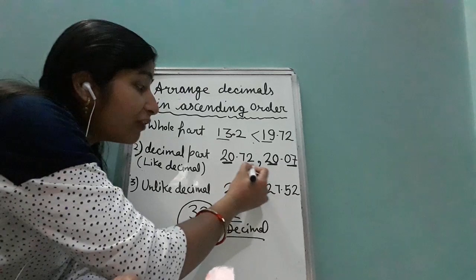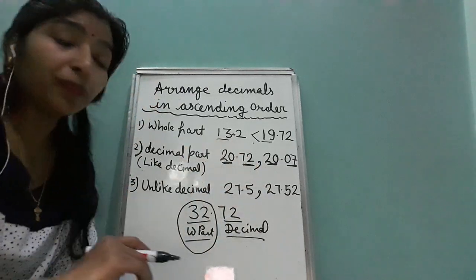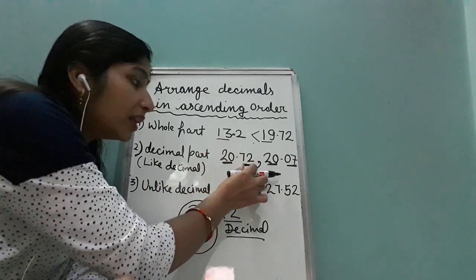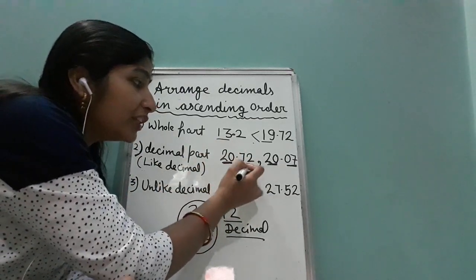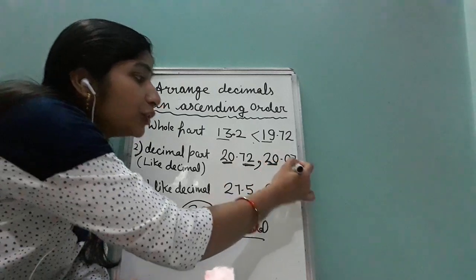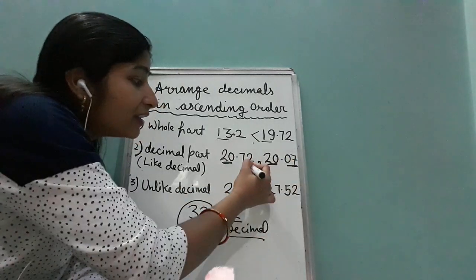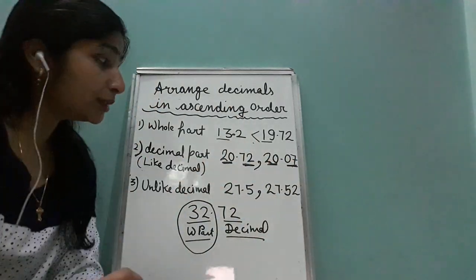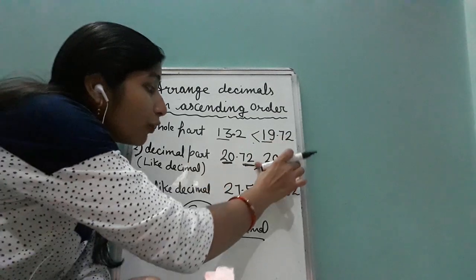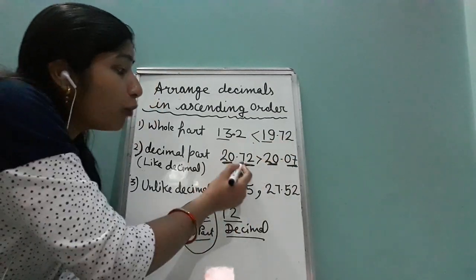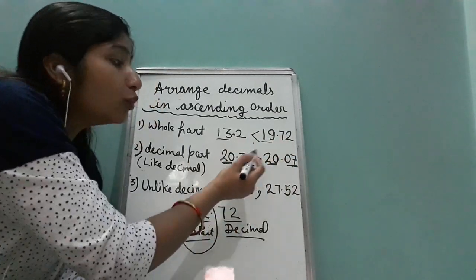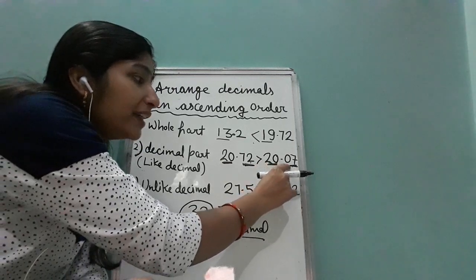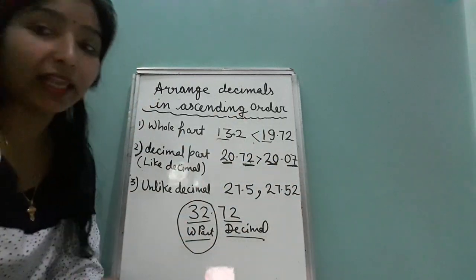So first we will compare the whole part — that is the same, so we go to the decimal part. After the decimal you read them like this: 72 and 07. This is 7 and this is 72. So 20.72 is greater than 20.07.